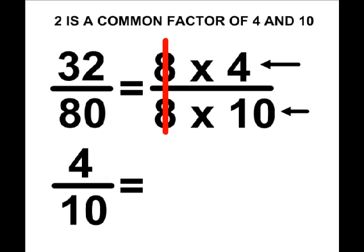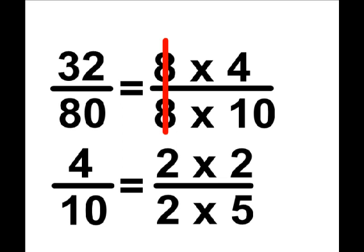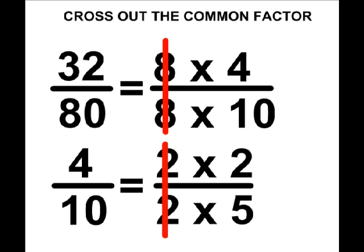Because 2 is a common factor of 4 and 10, I am going to write a 2 on the top and a 2 on the bottom, and then multiply those common factors by the numbers that will produce the numerator and the denominator of the fraction 4 tenths. What we have remaining is 2 fifths.